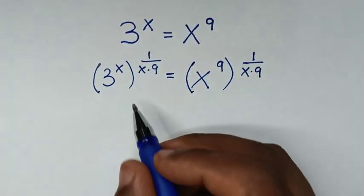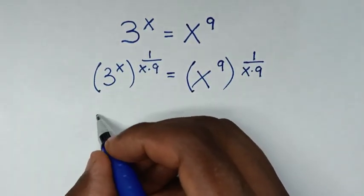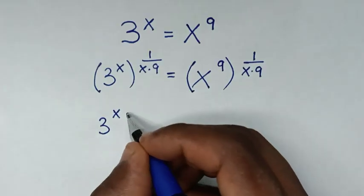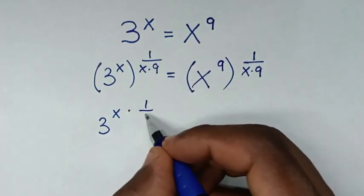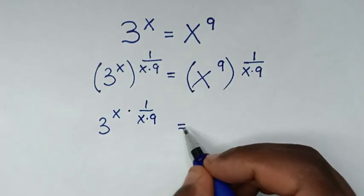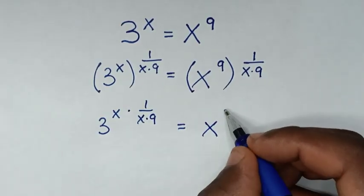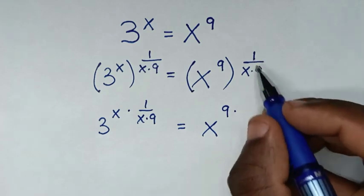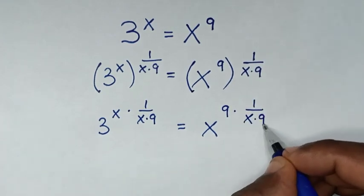In the next step, we open these brackets. So it will be 3 to the power of x times 1 over x times 9, and on the right side we open the bracket to get x to the power of 9 times 1 over x times 9.